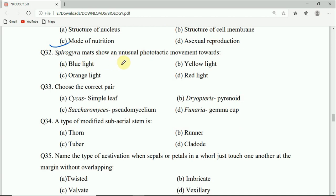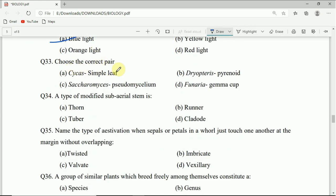Question number 32: Spirogyra mats show an unusual phototactic movement towards blue light, yellow light, orange light, or red light. Correct answer is blue light.